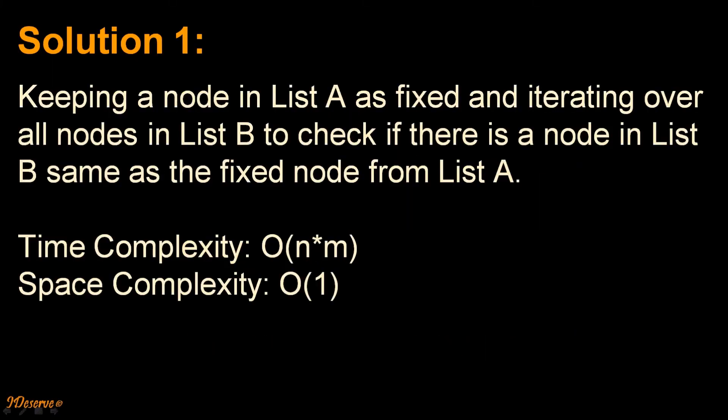We will discuss two solutions to this problem. The first solution is keeping a node in list A as fixed and iterating over all nodes in list B to check if there is a node in list B same as the fixed node from list A. Time complexity of this solution is O(n*m), where n is size of list A and m is size of list B, and space complexity is O(1).